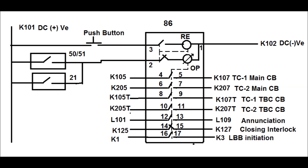There are several contacts of the 86 relay — NO contacts at terminals 4 and 5, 6 and 7, 8 and 9, 10 and 11. Both the NO contacts are connected to TC1 (Trip Circuit 1) and Trip Circuit 2 of the main circuit breaker. Sometimes in the substation we use TBC — that is transfer bus coupler circuit breaker — when we maintain the main circuit breaker. The contacts of the 86 are extended also to Trip Circuit 1 and Trip Circuit 2 of the TBC breaker.